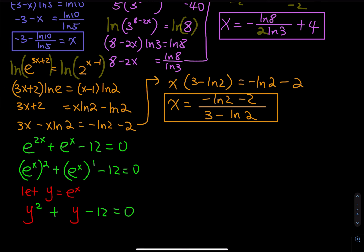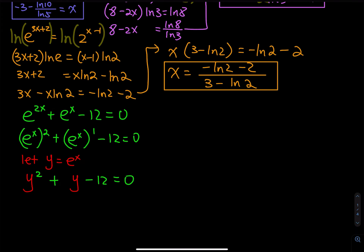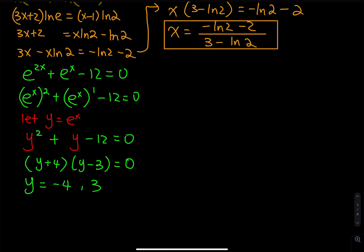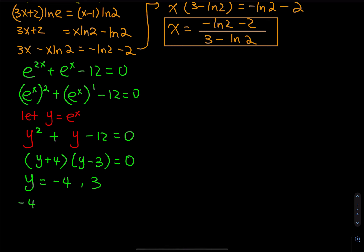That becomes a quadratic equation, so we factor it as (y plus 4)(y minus 3) equals 0 — because 4 times negative 3 is negative 12, and 4 plus negative 3 is 1. Applying zero product property: y equals negative 4 or y equals 3. Since e is approximately 2.7, multiplying it by itself never gives a negative, so y equals negative 4 has no solution.